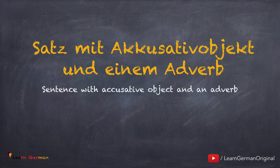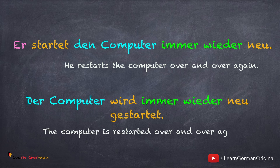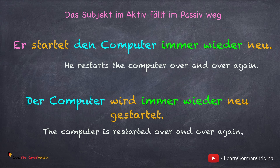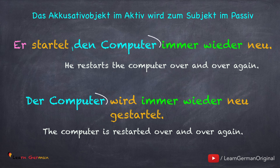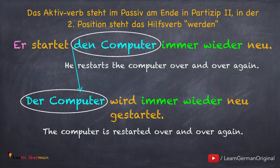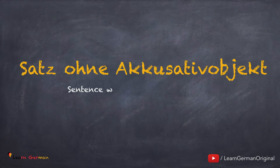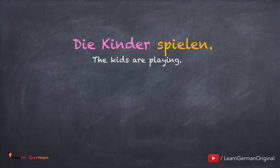Der nächste Satz hat ein Akkusativobjekt und ein Adverb. Er startet den Computer immer wieder neu. Im Passiv ist der Satz ohne einen Täter: Der Computer wird immer wieder neu gestartet. Das Akkusativobjekt ist jetzt das Subjekt, der Computer. Das Verb steht am Ende in Partizip 2 und in der zweiten Position steht das Hilfsverb werden. Das Adverb bleibt unverändert.